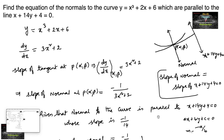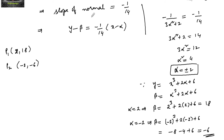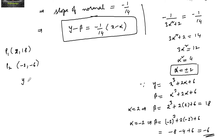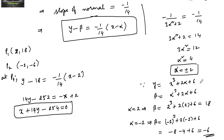Since we need to find two normal equations, substituting point P1(2, 18) into y − β = −1/14 · (x − α): y − 18 = −1/14 · (x − 2), which gives 14y − 252 = −x + 2, or x + 14y − 254 = 0. This is the first equation of the normal.